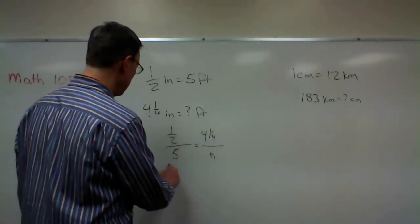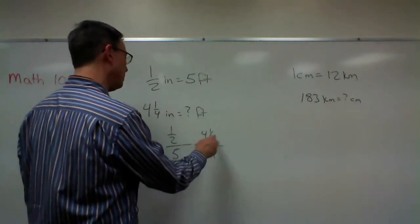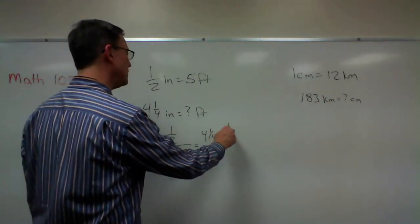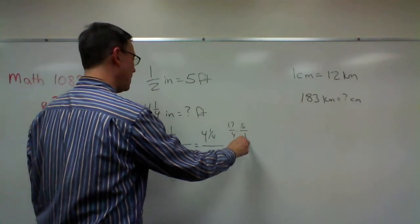So let's cross multiply. One-half n equals, and now to multiply this we turn this into 17 over 4 times 5 over 1.